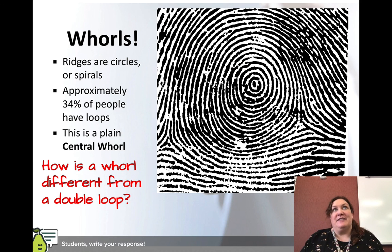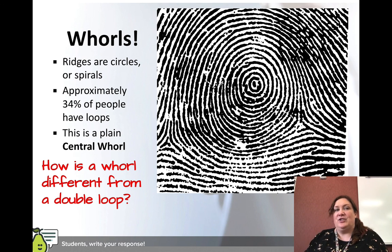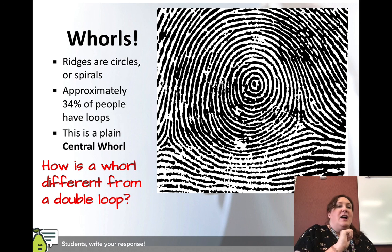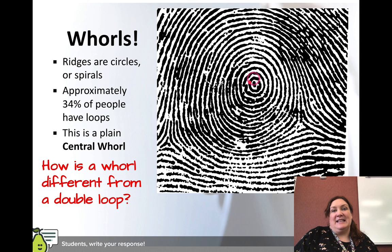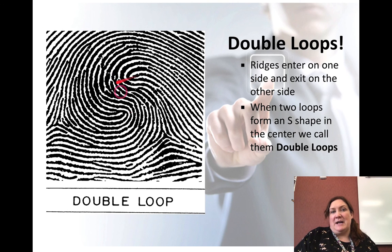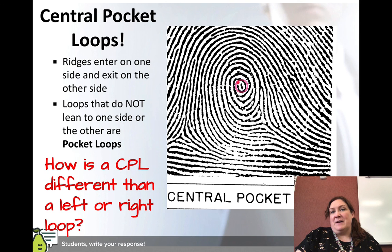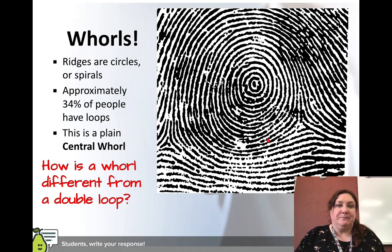Whorls are a little different. They look similar to a central pocket loop, except the ridges are circles or spirals all the way through. Approximately 34 percent of people have whorls. This is a plain central whorl — there's a point in the center and then everything is concentric circles going out. The central pocket loop has a spot in the center too, but its ridges aren't necessarily concentric on the way out. Whorls are concentric all the way out.